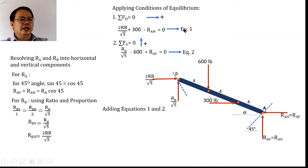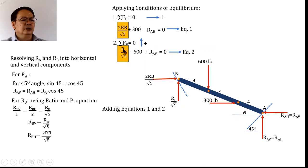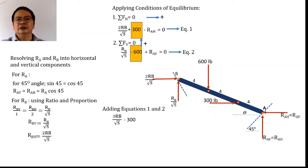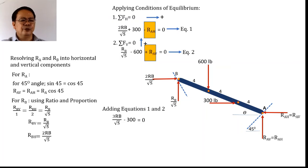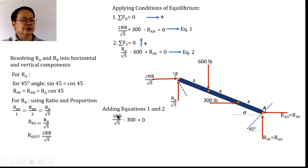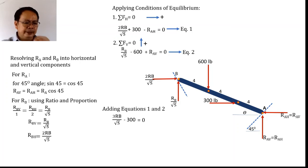Adding equations one and two: 2R_B/√5 + R_B/√5 = 3R_B/√5, while 300 and −600 combine to give −300, and R_A terms cancel. Simplifying: 3R_B/√5 = 300, so R_B = 100√5. We write it this way because the √5 will cancel later.